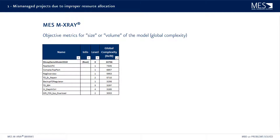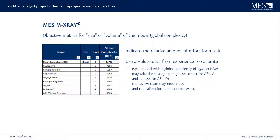Global complexity can be shown in a table with regards to the root model itself, as well as subsystems and the content ordered by complexity. These numbers — the global complexity — can indicate the relative amount of effort for a specific task. You can use this number and absolute data from experience from previous projects in order to calibrate. For example, a model with a global complexity of roughly 25,000 Halstead model volume may take the testing team five days to test for ASIL A or 12 days to test for ASIL D.